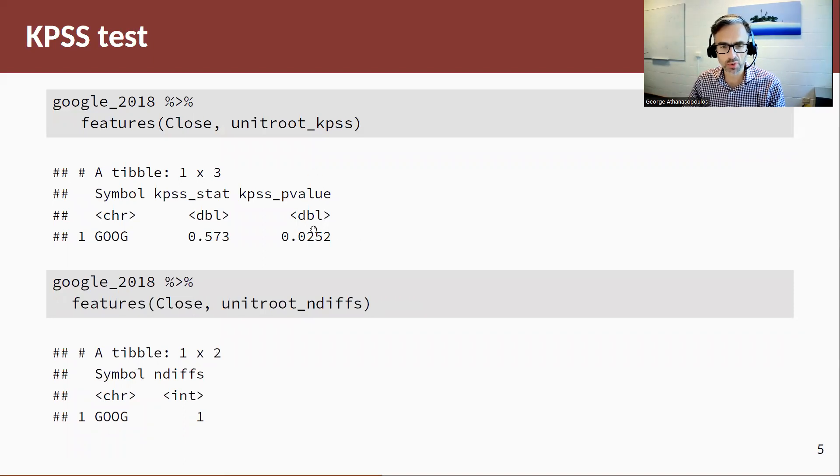The alternative way of doing that if you don't want to look at the values of the test itself is to call upon the unit root underscore n diffs, the number of diffs function, and that will tell you how many differences you need to take to make this data stationary. So in this case, it says that we need to take one difference to make the Google closing stock price stationary.